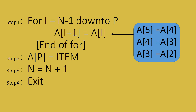Inside the for loop, array at the i plus 1th location is assigned the value of array at the ith location, effectively shifting elements one position forward.